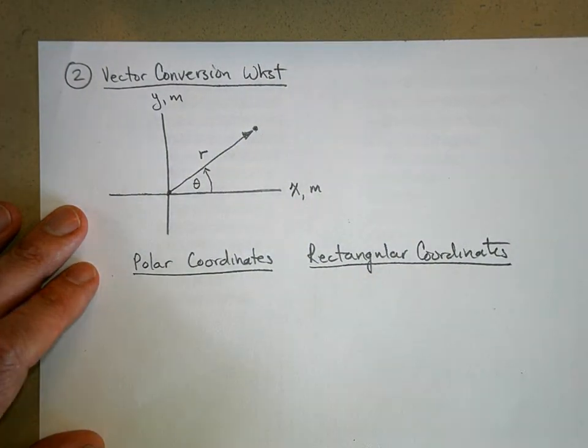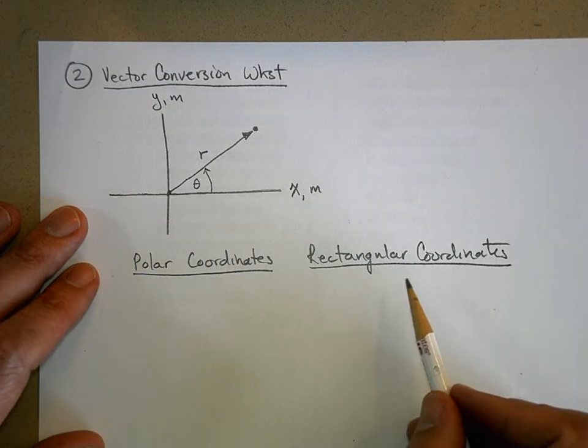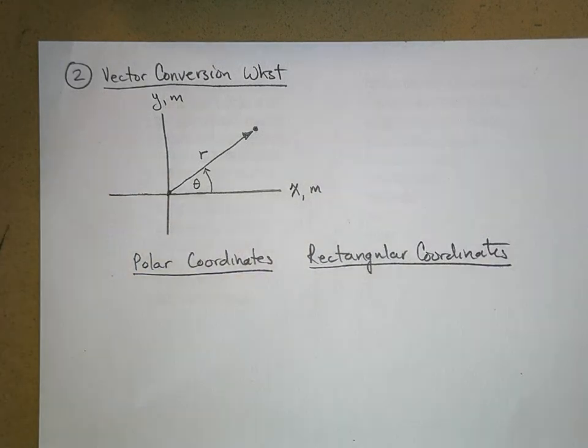And what we want to do is define what these are. And then I want to be able to go back and forth between them. I want to be able to convert from polar to rectangular and rectangular to polar coordinates. And that's what we're going to do today.